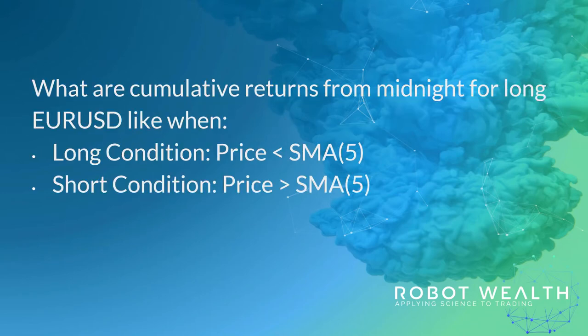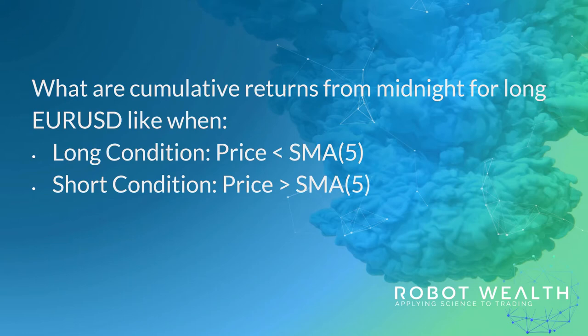So we're going to start by looking at some conditional seasonality plots. We want to know what cumulative returns look like when we're in a condition where we might be long — expecting a reversal — and a condition where we might be short, expecting a reversal. We define our long condition as the price being under the 5-hour simple moving average, so we've seen some short-term negative momentum. Our short condition is the price being above the 5-hour SMA — short-term positive momentum. Those definitions are just the first ones we came up with; it's a crude way of quantifying the effect we're after.